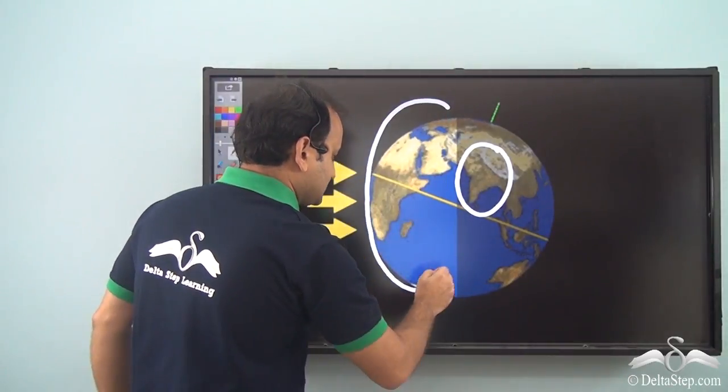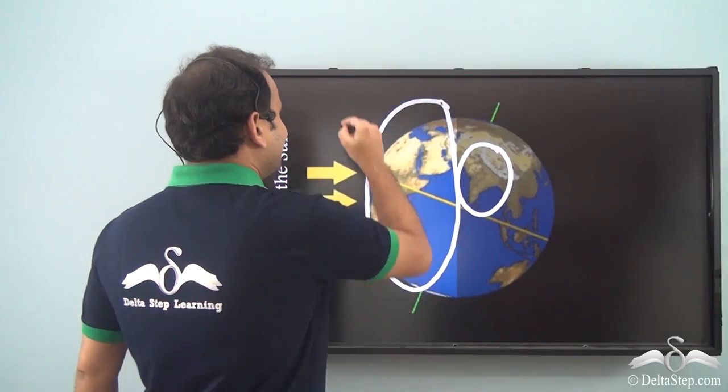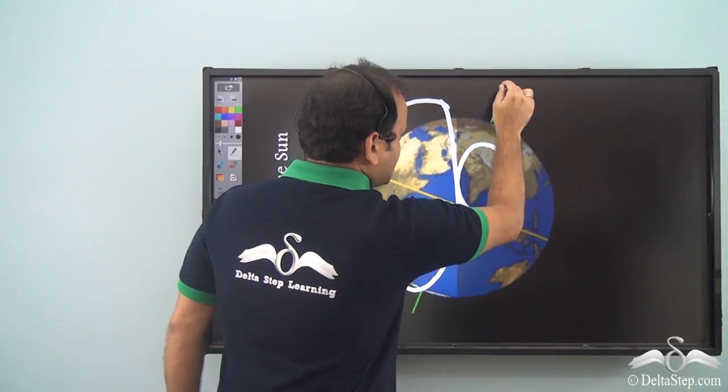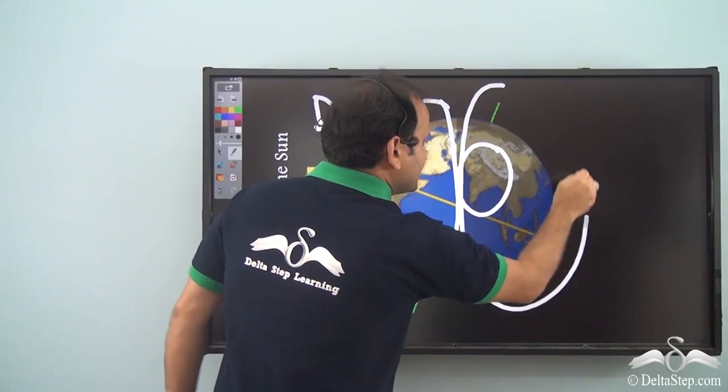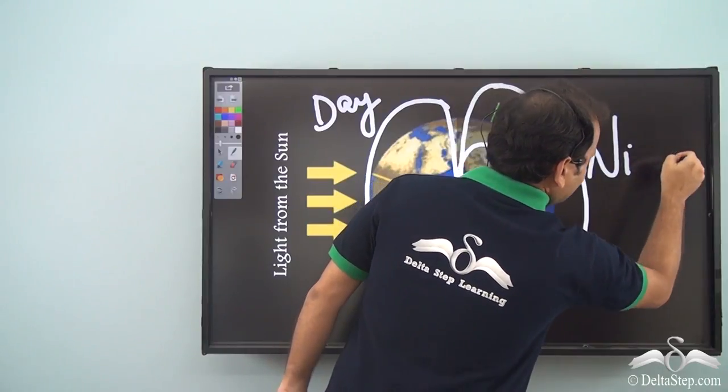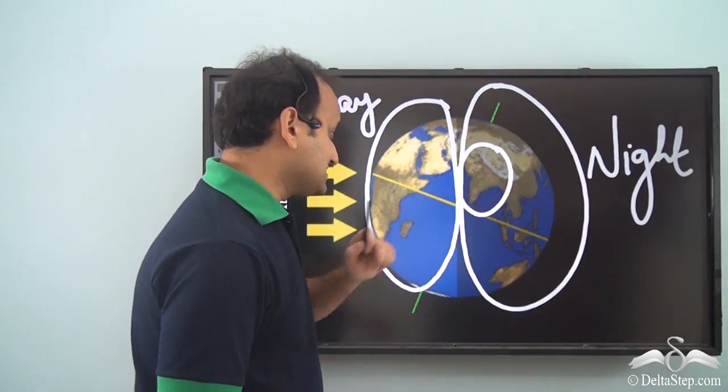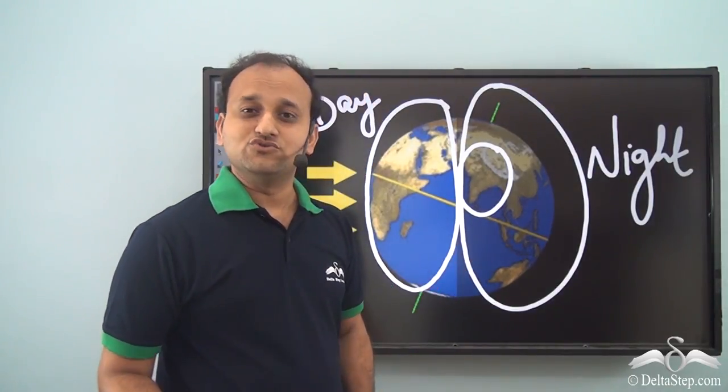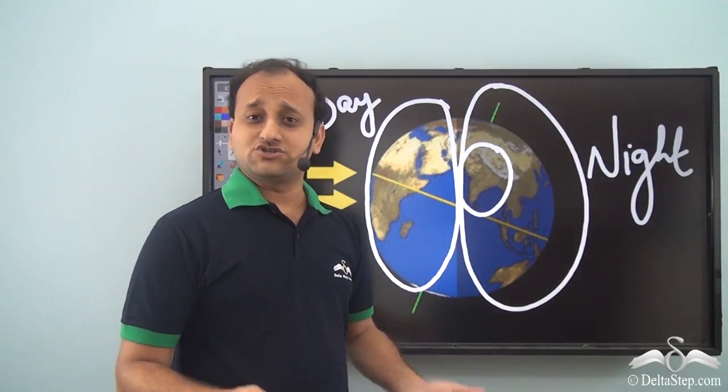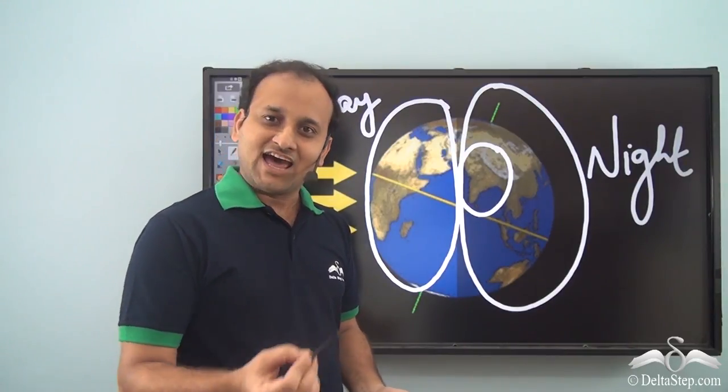So when the country is in this part of the earth, then they have daytime. And when due to rotation of the earth the country moves into this part, then they have night. And that is how the cycle of day and night continues continuously all the time, because the rotation of earth does not stop. It happens all the time, and that is why we continuously have day and night and then day again.